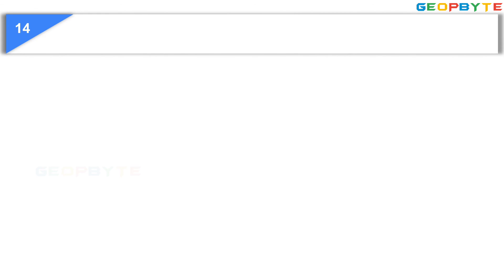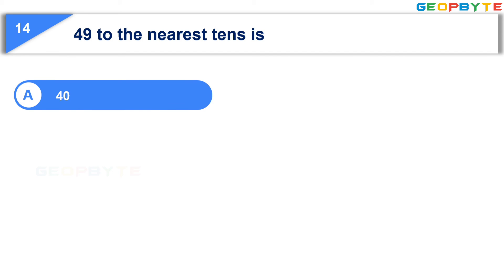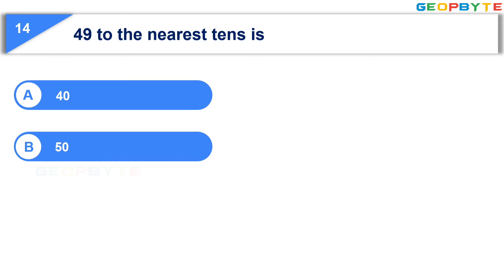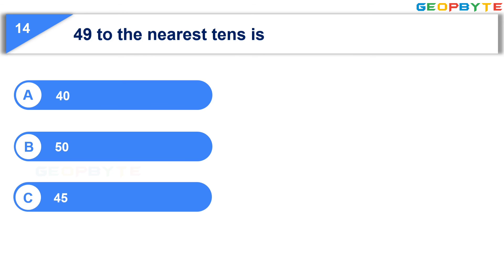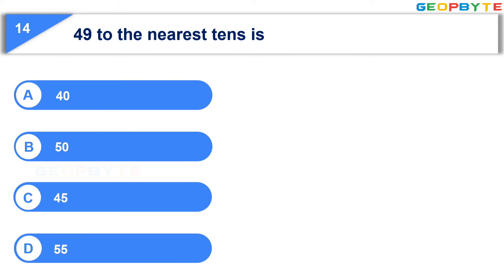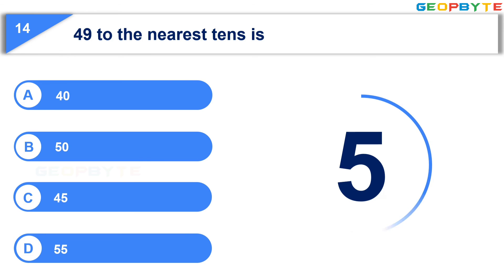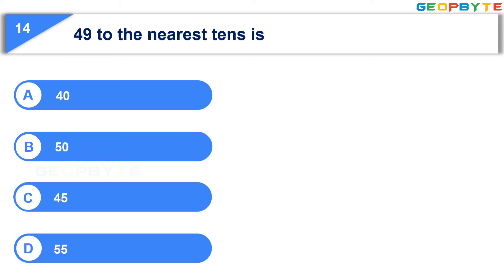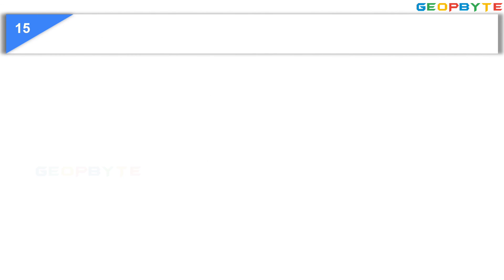Let us see the next question. 49 to the nearest tens is — Option A: forty, Option B: fifty, Option C: forty-five, Option D: fifty-five. Your time is up and the correct answer is Option B: fifty.